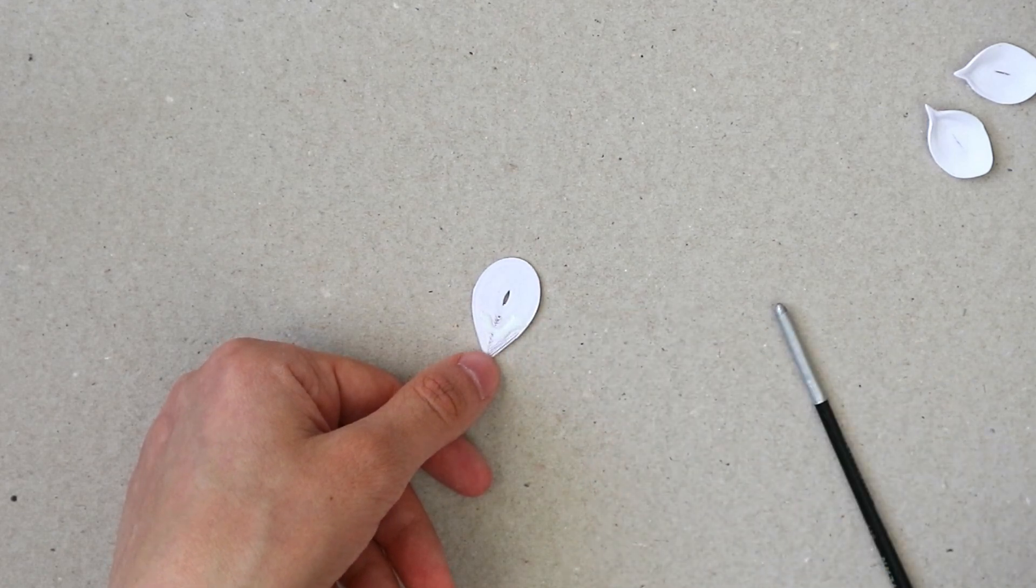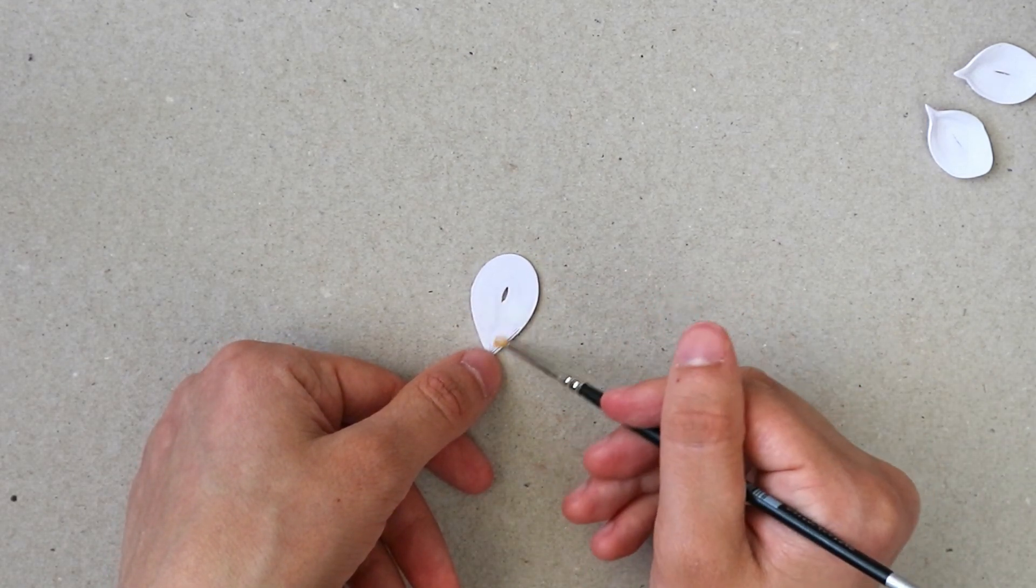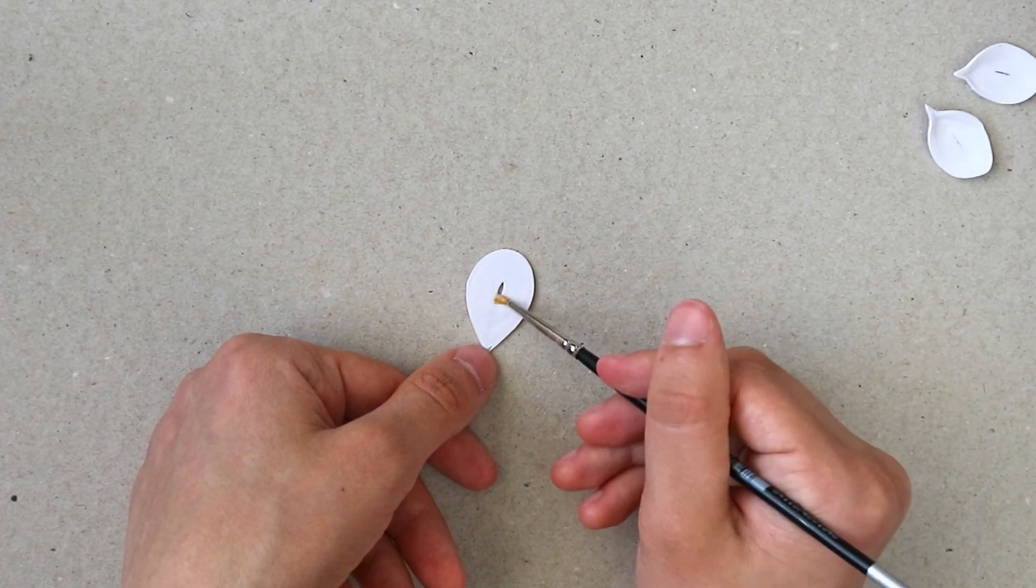And one last method is to use your paintbrush to spread the glue on your paper quilling pieces.